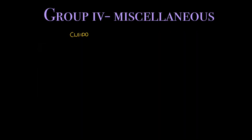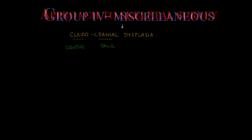Group 4 has conditions which do not fall under any particular category, like cleidocranial dysplasia — where 'cleido' means clavicle and 'cranial' means skull.